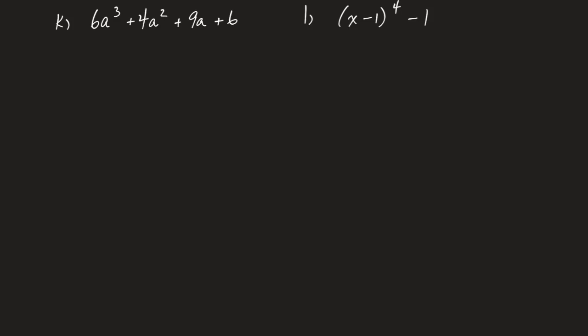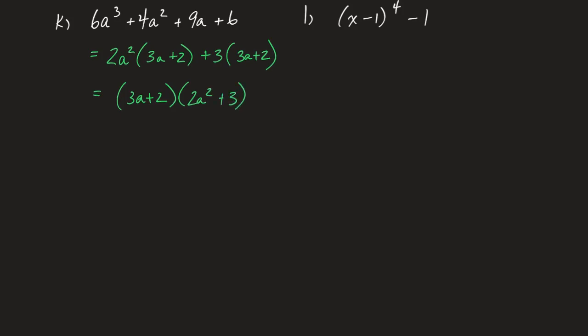Use K as another check — pause and give it a shot if you weren't able to factor it earlier. Back: 4 divided by 6 is 2/3; 6 divided by 9 is 2/3. Pretty sure this factors by grouping. Pull out 2a² from the first two terms, leaving (3a+2). Pull out 3 from the last two terms, leaving (3a+2). Confirmation it factors — pull out common factor (3a+2), leaving (2a²+3). Fully factored.